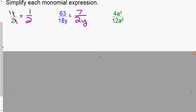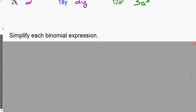4 over 12 reduces to be 1 third. For a to the third over a to the sixth, use the quotient property: 6 minus 3 gives 3 in the denominator. If your values are in the denominator, you always have some type of numerator — in this case it is 1. If you cancel everything out, your numerator is still 1.